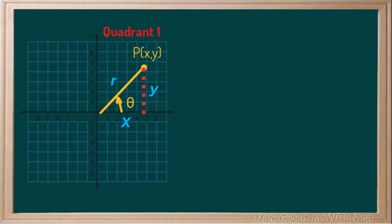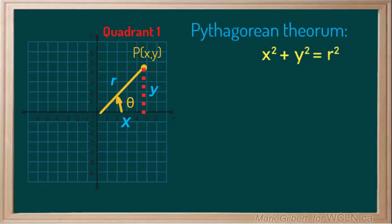We can always find r using Pythagoras. x² + y² = r². We can square root both sides and we get r is equal to the square root of x² + y².